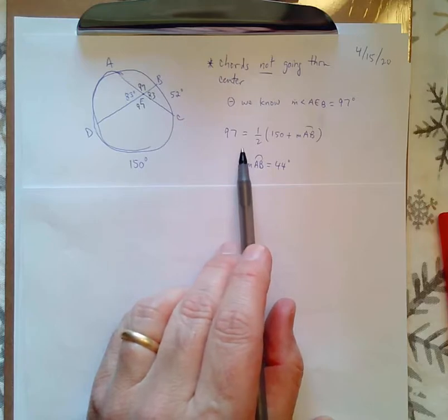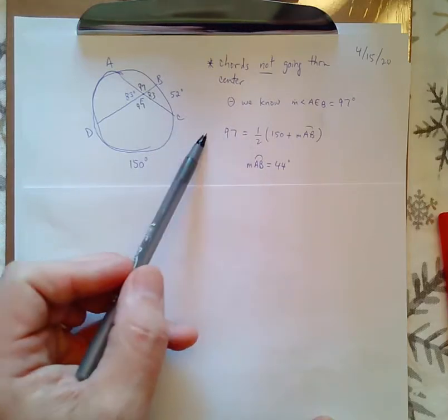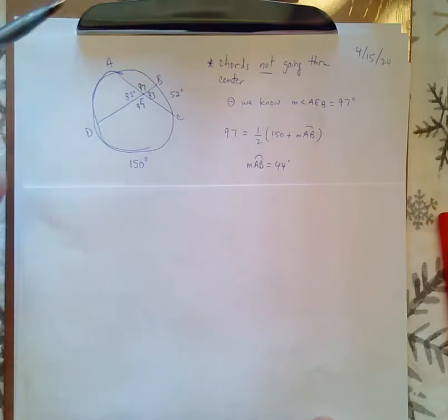That's the formula from section 10.5 you need to follow. And then, if I multiply both sides by 2 and subtract 150, you will get that the arc is 44 degrees up here.